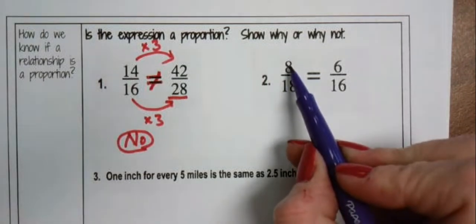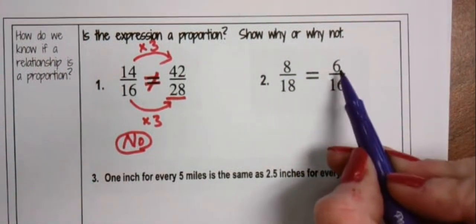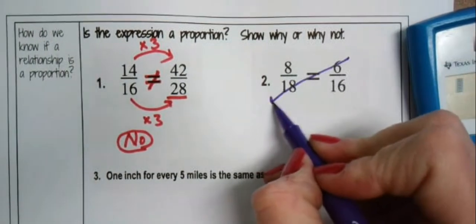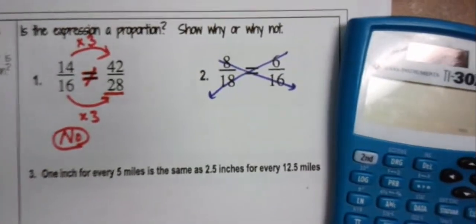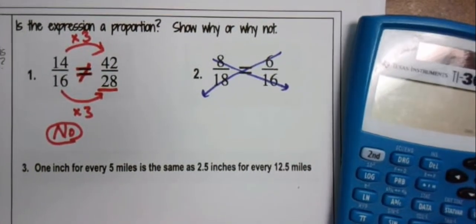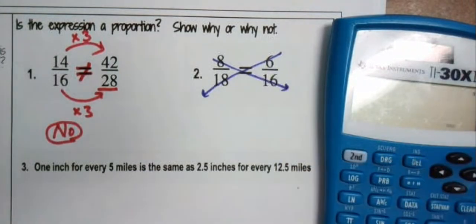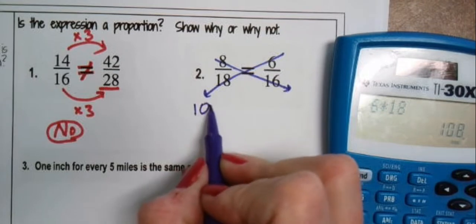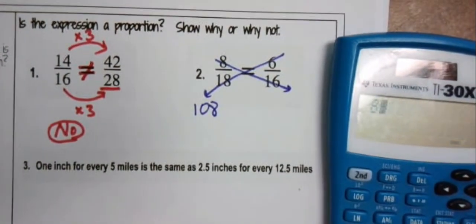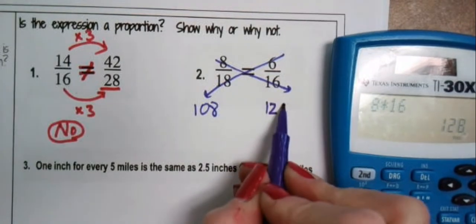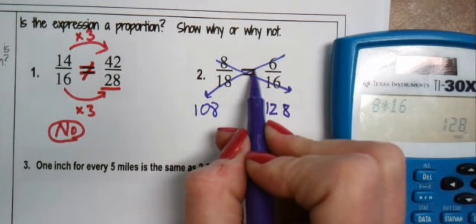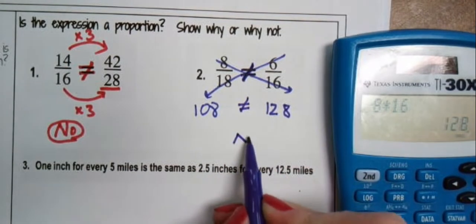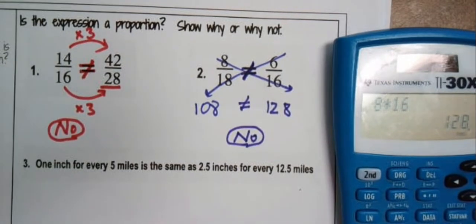On number two, there's not a real easy relationship between 8 and 6 or even 8 and 18 — not horizontally, not vertically. So let's try cross products. If these two are equal, the cross products should also be equal — we're multiplying going across. So 6 times 18 gives 108, and 8 times 16 gives 128. The cross products are not equal, therefore these fractions are not equal. So: no, not a proportion.